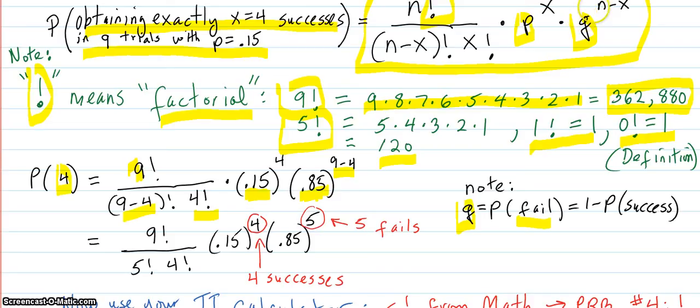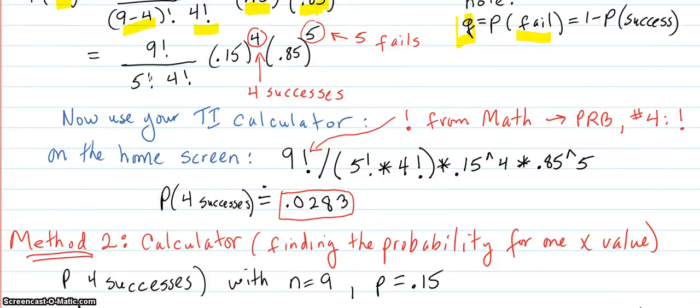So then we just clean that up a little bit with a little bit of algebra. Nine factorial over this here, and I'm just pointing out that this number, four, is how many successes you have. And the rest is going to be five fails, because if you have nine trials and four successes, then of course you're going to have the rest, which is five in this case, be fails. And those two numbers always add up to the n.